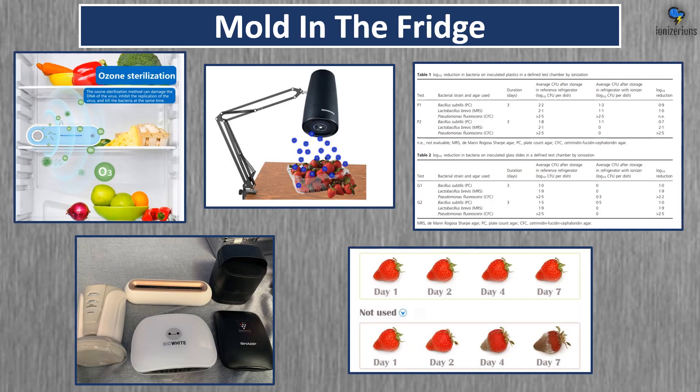There are many types of ionizers and air purifiers we can use in our fridge to get rid of mold. Mold in the fridge is a big problem, and ionizers can eliminate mold and bacteria inside the fridge. You can also use an ionizer directly on your fruits to kill mold, pesticides, and bacteria.